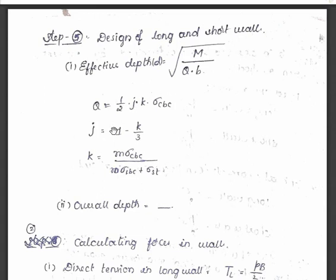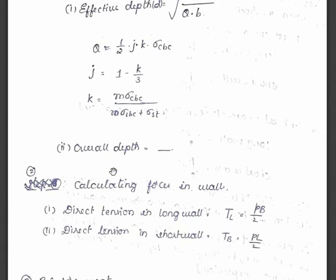Again a question occurs: what is j? j is 1 minus k/3. Again what is k? k is also a design constant that is given by m·sigma_cbc/(m·sigma_cbc + sigma_st). Again a question comes here: what is m? m is the modular ratio. You know this very well I think.